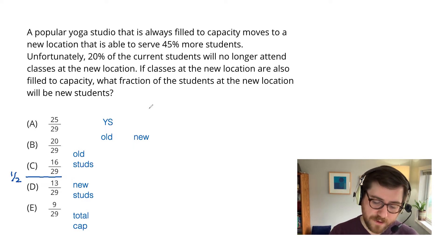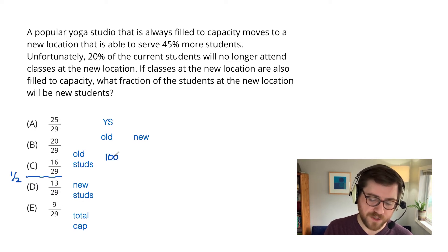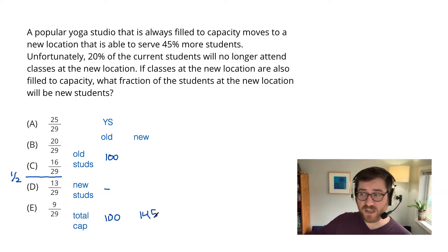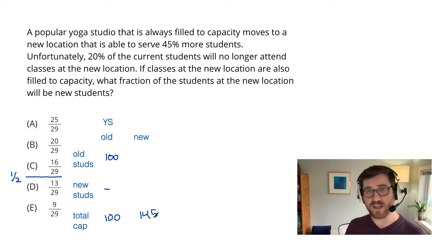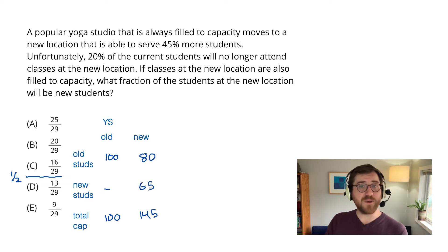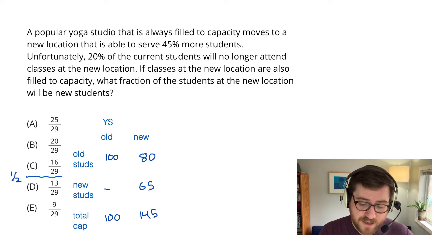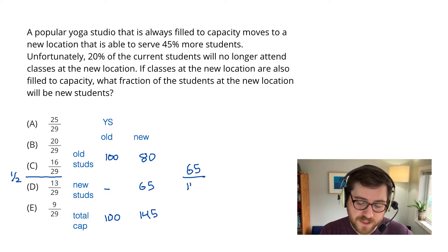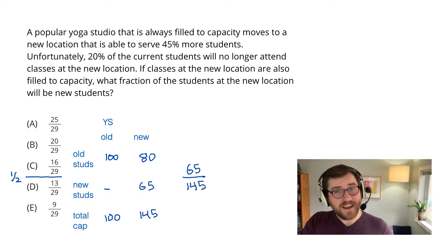Right here into the old number of students at the old studio, I'm going to plug 100. Of course, there were no new students there — that is the total capacity of the old studio. Now when I go to the new studio, it's going to increase by 45%, so the new capacity is 145. What kind of students are going to be attending the new studio? 20% of the old students can't come to the new studio, so we're down to just 80 of them. And yet we're still at capacity, so the other 65 must be the new students. I've got the fraction of students at the new location who will be new students — 65 out of 145. In essence, that's my answer.